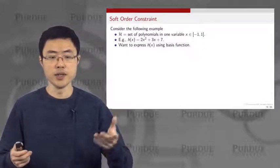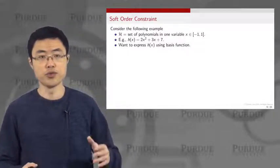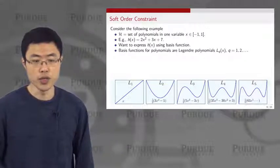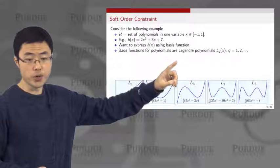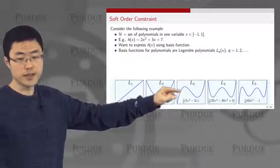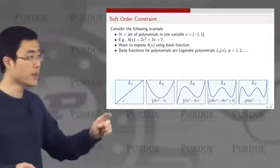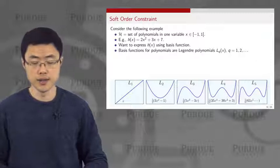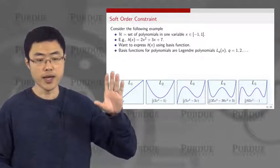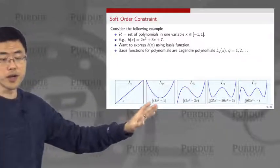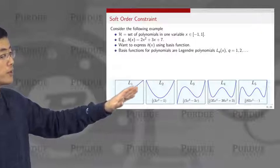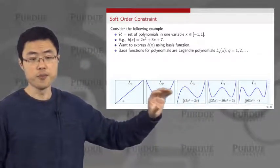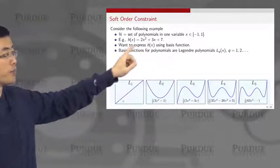We want to express a polynomial in terms of its basis functions. Rather than using x squared, x, and a constant as basis functions — because those are not ideal — we consider a set of polynomials called Legendre polynomials. These polynomials are orthogonal, meaning that taking the inner product between any two distinct Legendre polynomials — integrating from minus one to one — gives zero. Only the inner product of a polynomial with itself is nonzero.